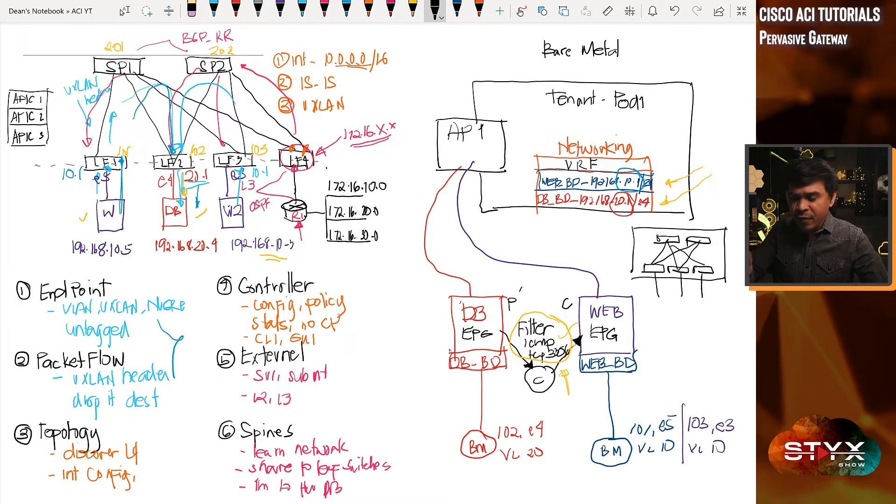If you think about, or if you imagine this as an entire fabric, as one logical gigantic switch, it would be easier for you to understand the flow of the traffic in our ACI.